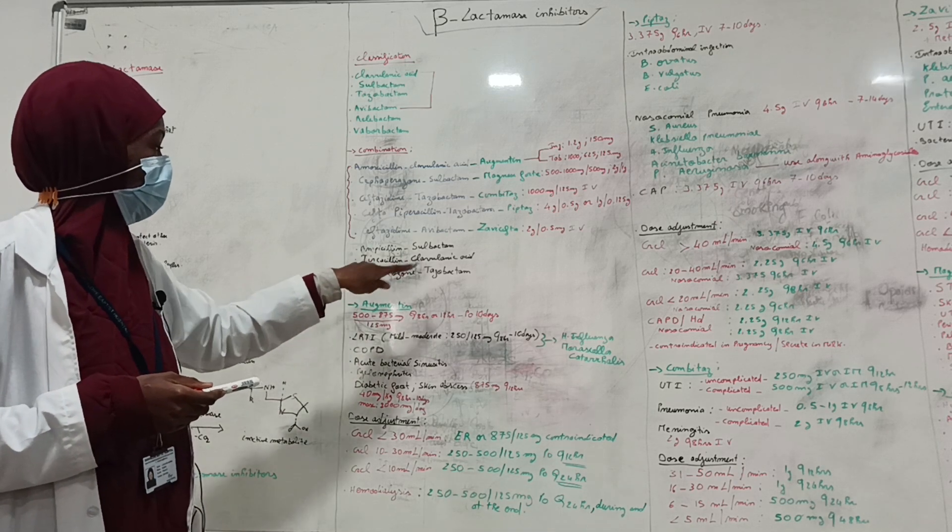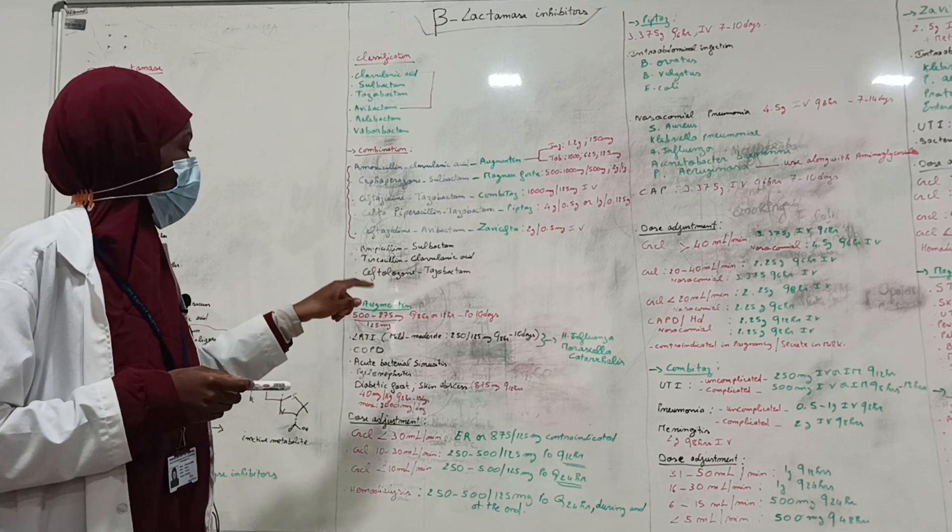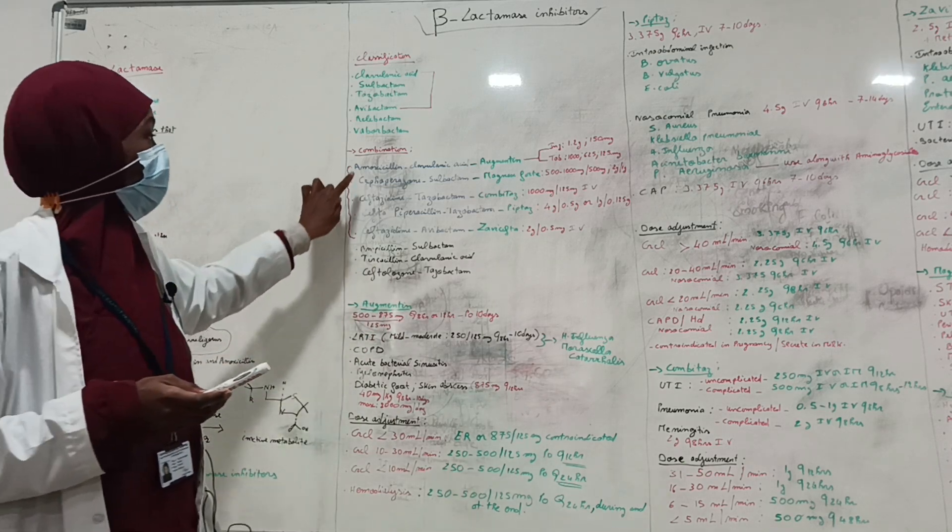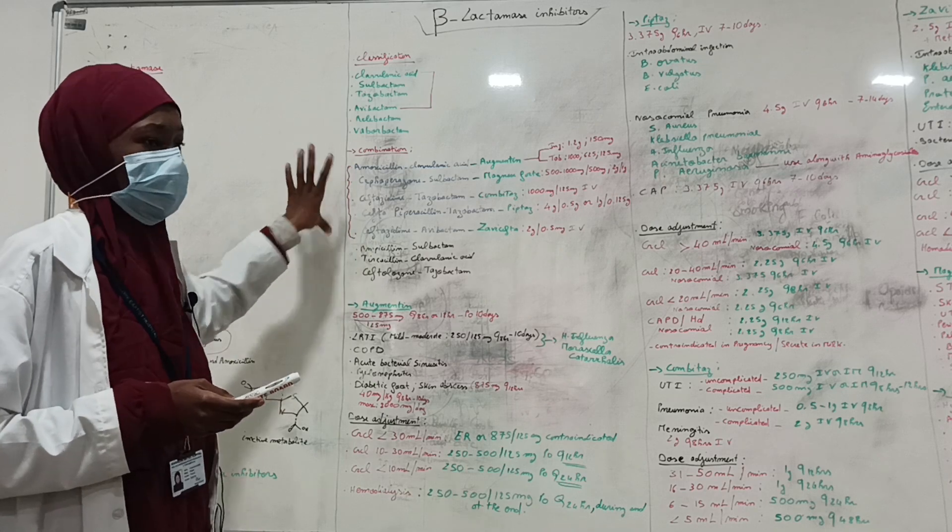Other combinations are there as well: ampicillin and sulbactam, ticarcillin-clavulanic acid, ceftolozane and tazobactam. But in the hospital drug formulary, only those ones are there, so we'll be focusing only on those ones.